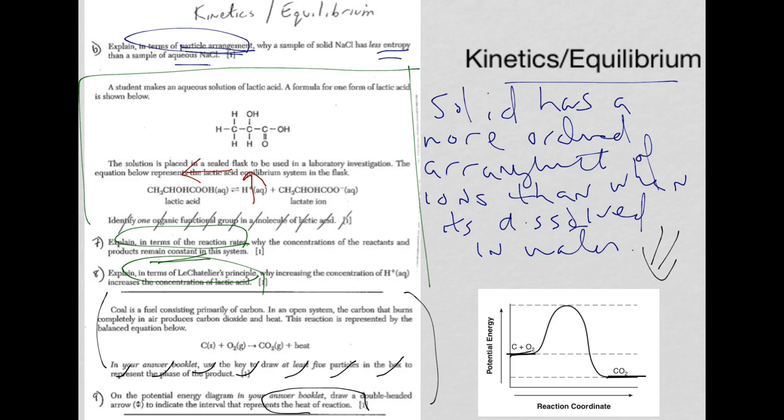So you're going to put your double arrow between that product and that reactant level and anywhere you could have drawn the double arrow. Could be here, could be here, could be here.